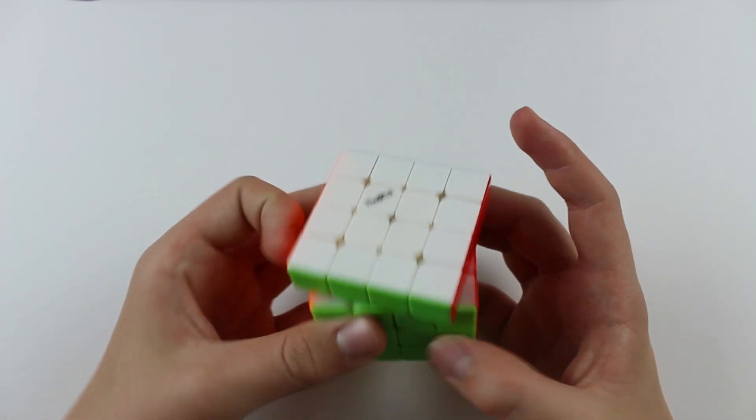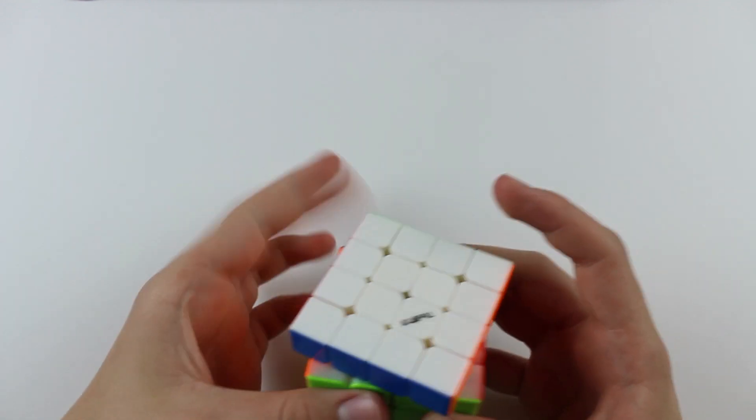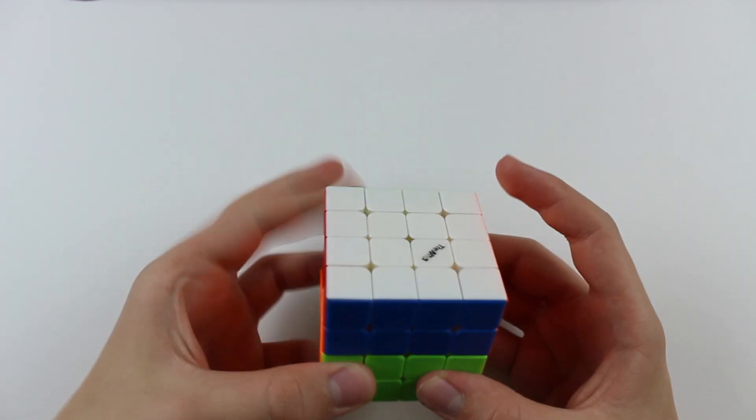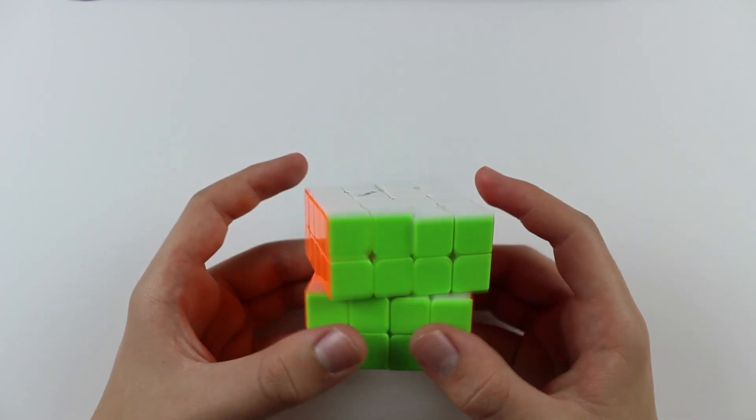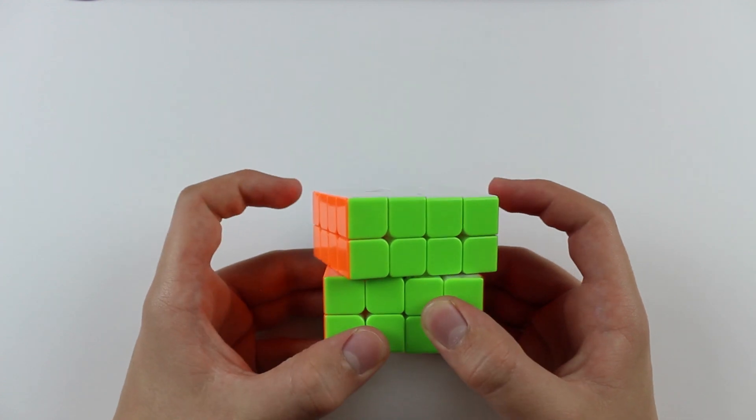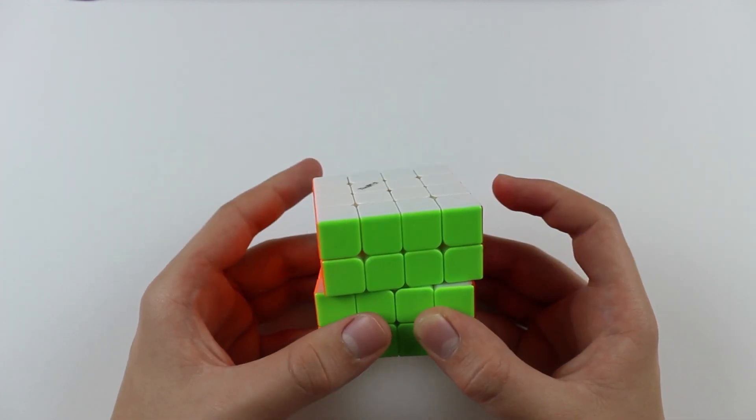But regardless, unless you have it on tighter tensions, this cube, at least it doesn't feel like it will perform well. And it does seem like it's giving me a bit of some lockups when I'm turning fast, especially on the inner layers. Even when I'm trying to corner cut just a bit like that, it'll just lock up and it won't turn.